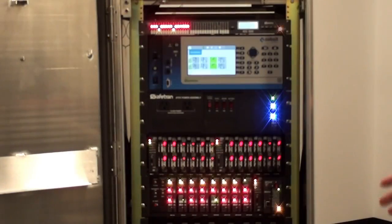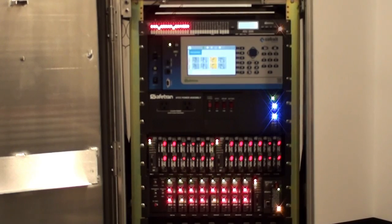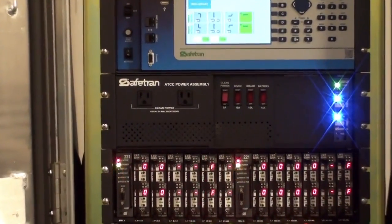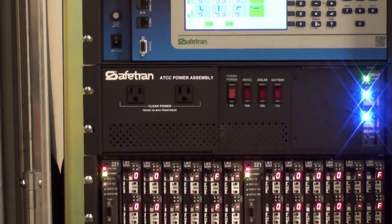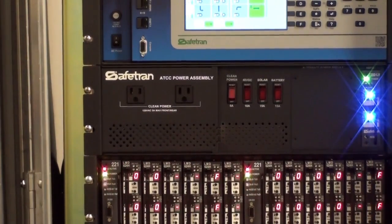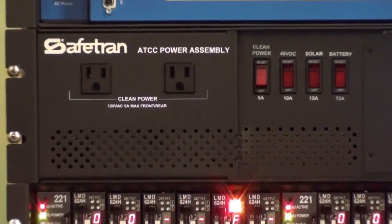The power assembly can be ordered in several different configurations. It can be ordered as an AC-only unit that drives standard 120-volt AC LED signals with no battery backup. It can also be ordered as an AC or DC-only unit that powers 48-volt DC signals with or without battery backup.